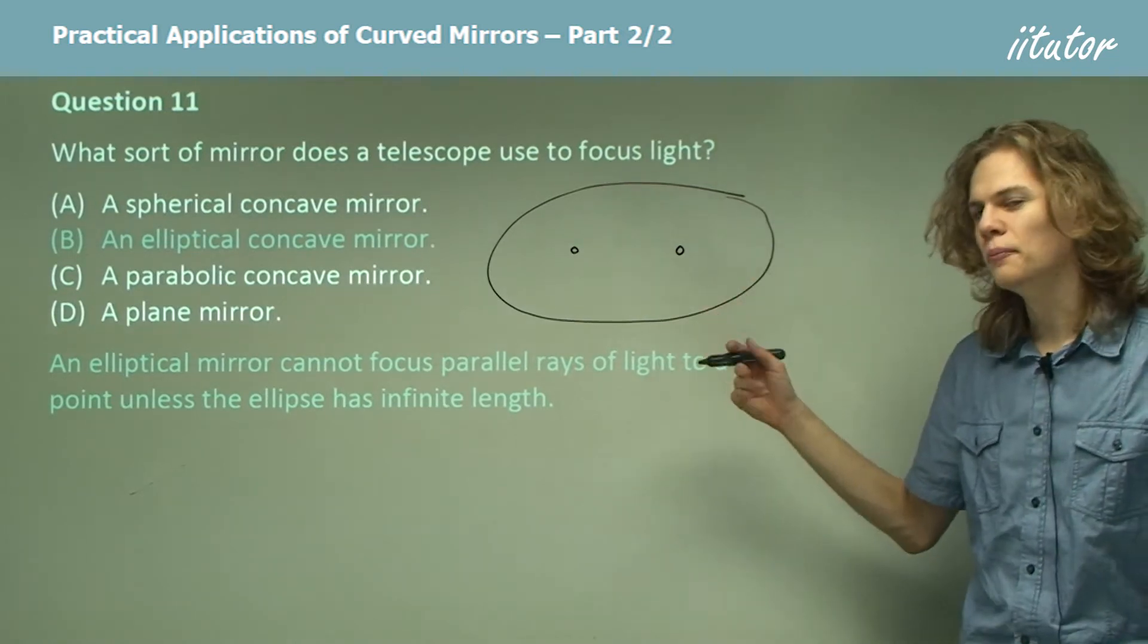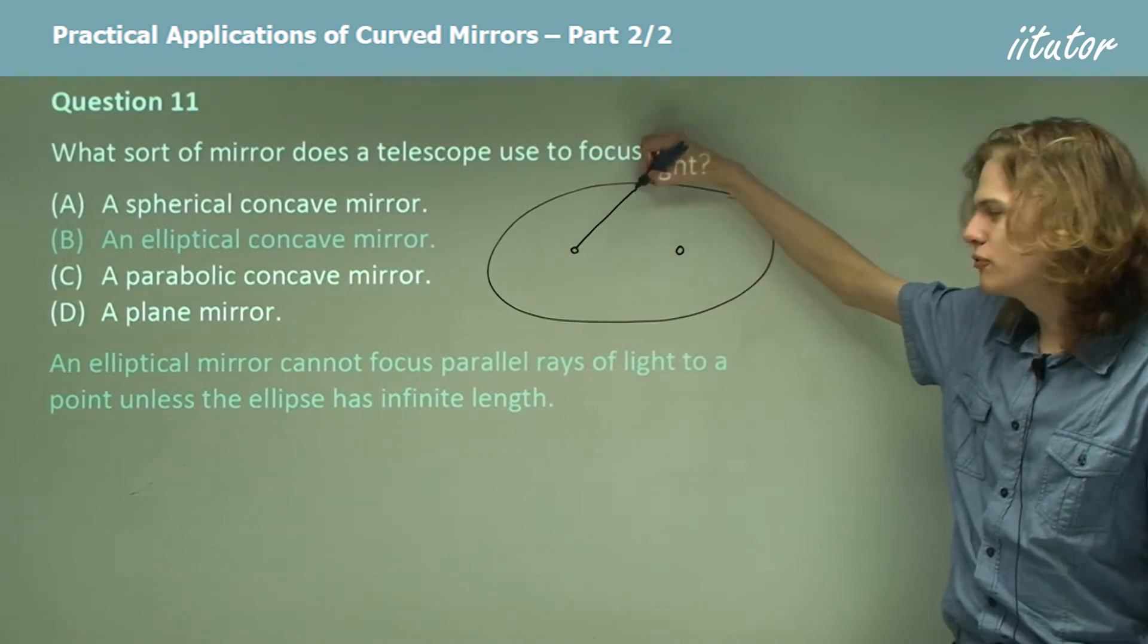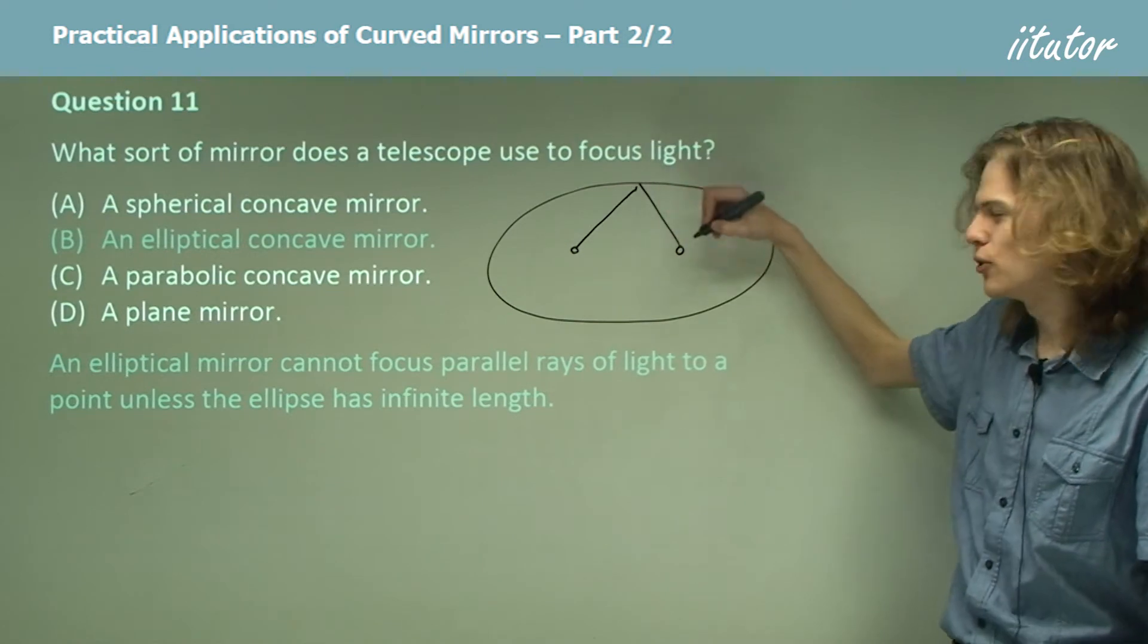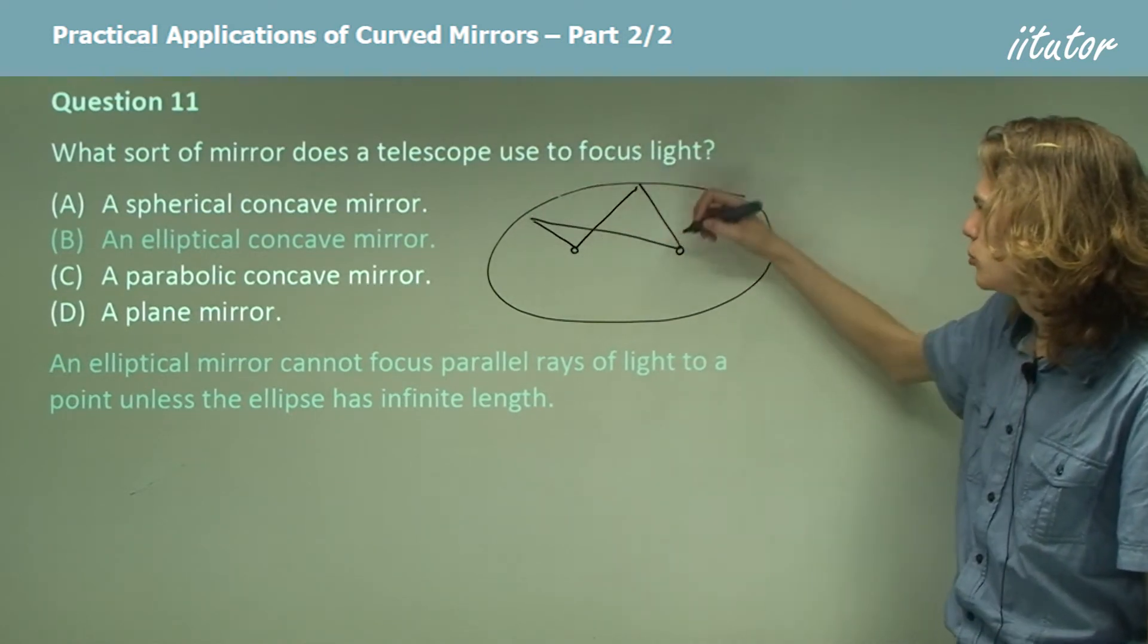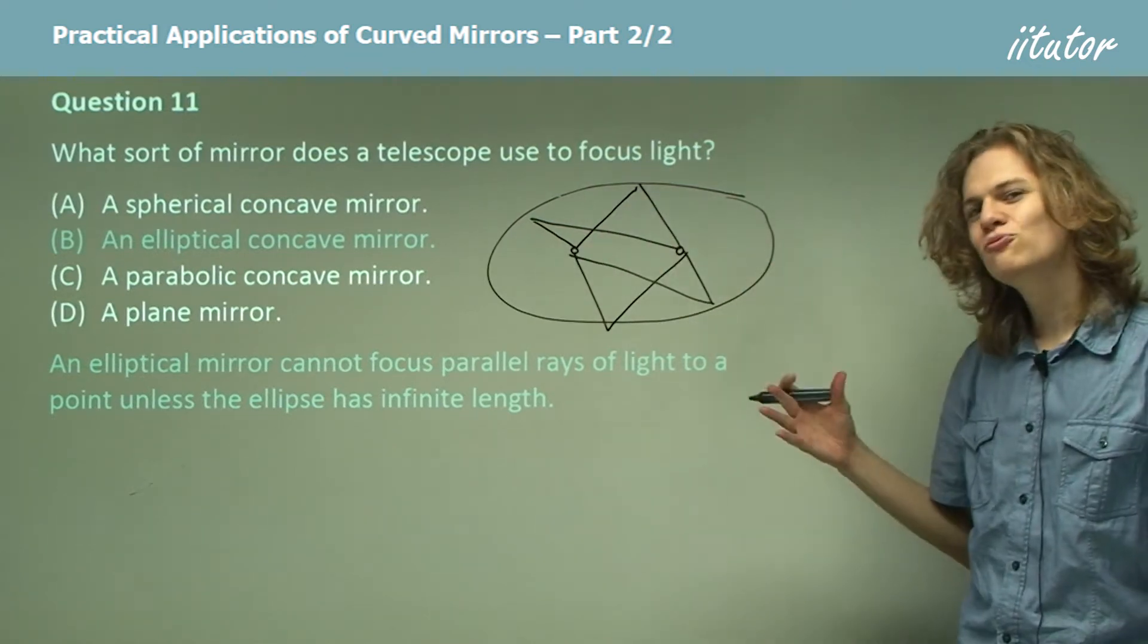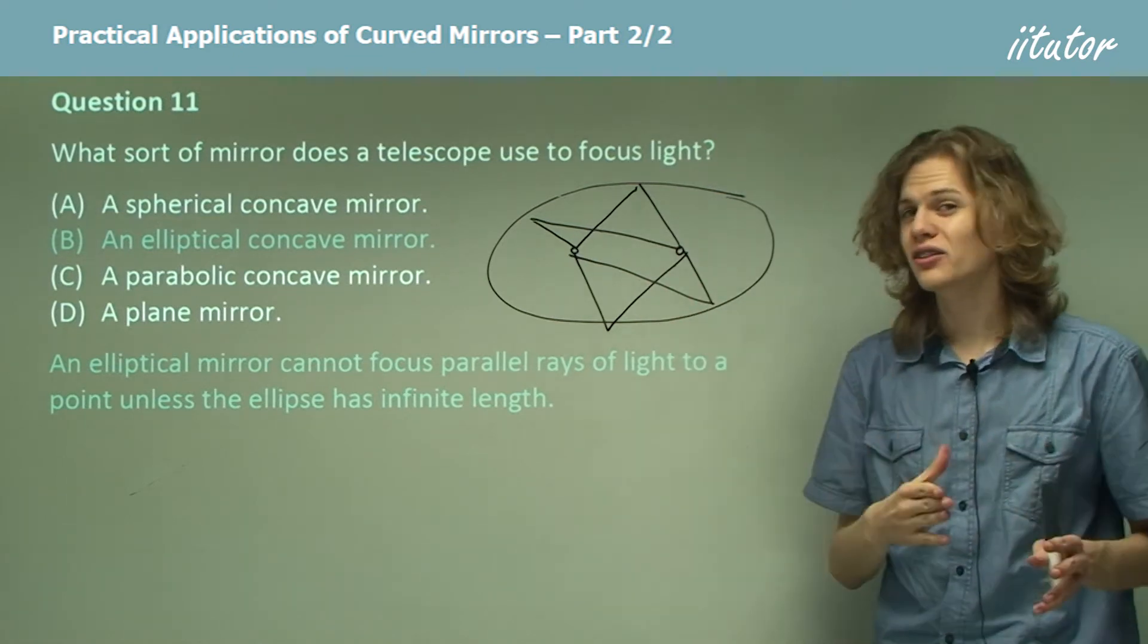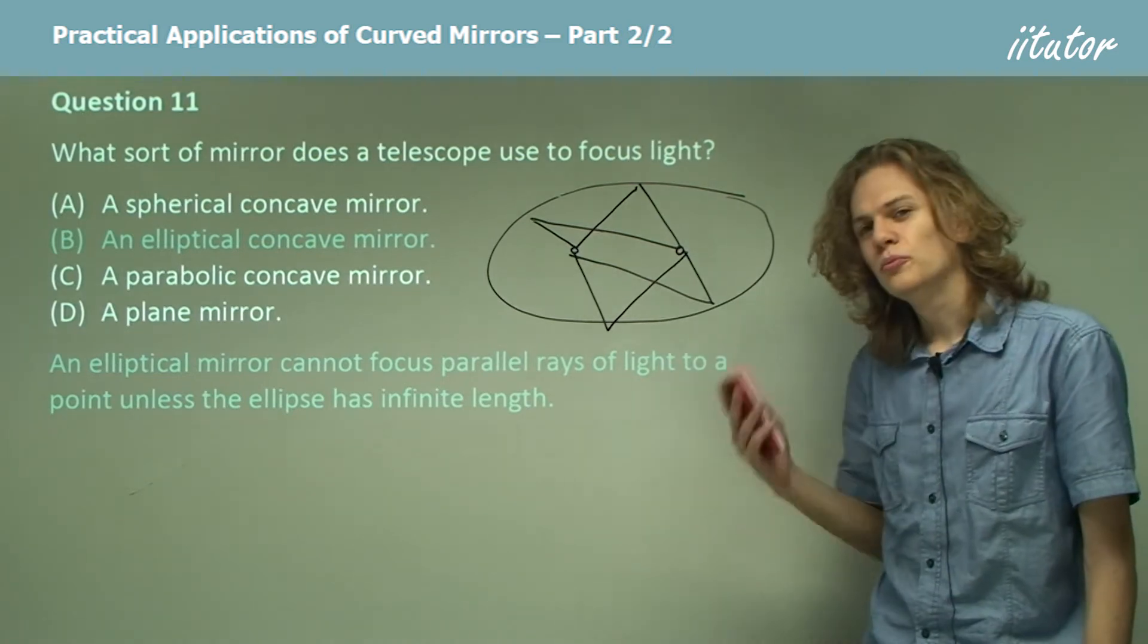So if we have an elliptical mirror, then any light that's emitted from one focus will bounce off the elliptical mirror and reach the other focus. And this will happen no matter where on the surface we decide to bounce off from. So this means that if we could have one of the focuses of the ellipse at the star that we're looking at, then sure, we'd be able to focus the light.